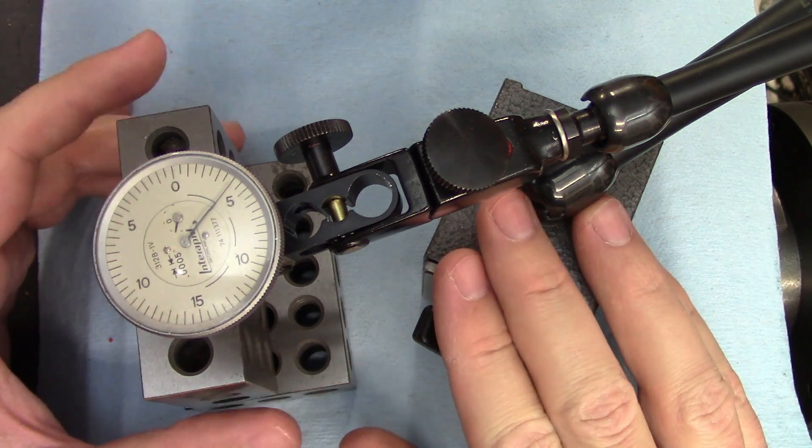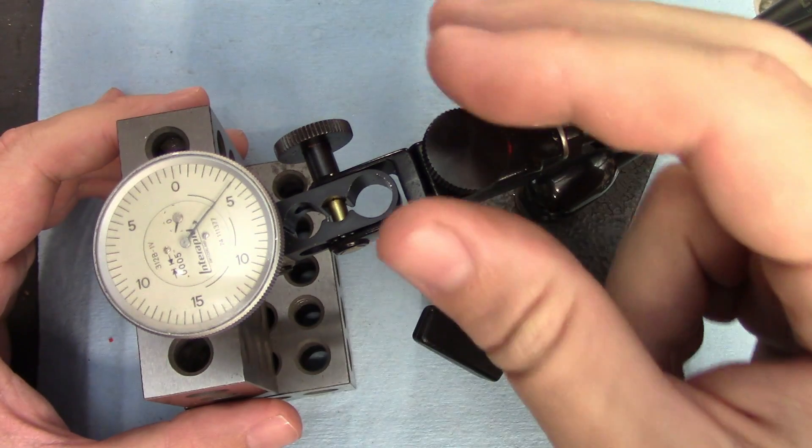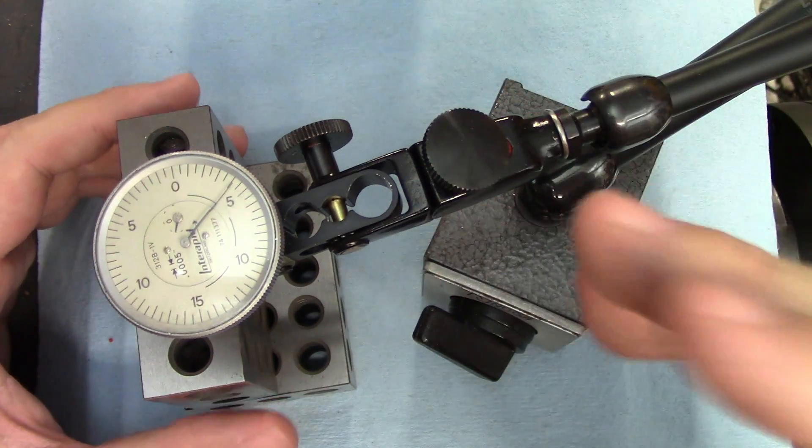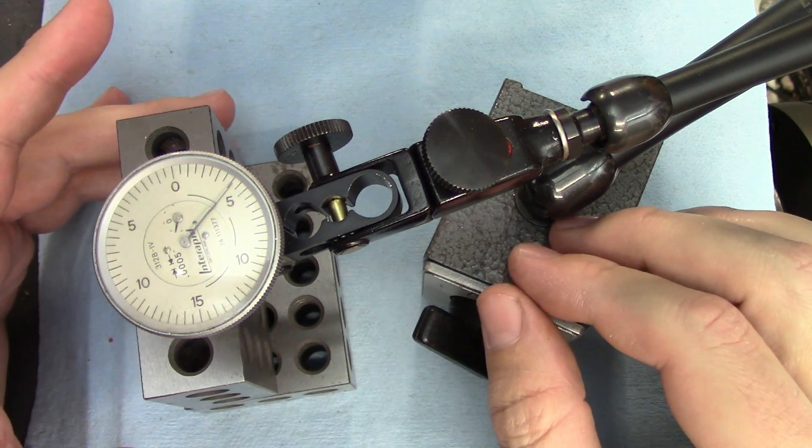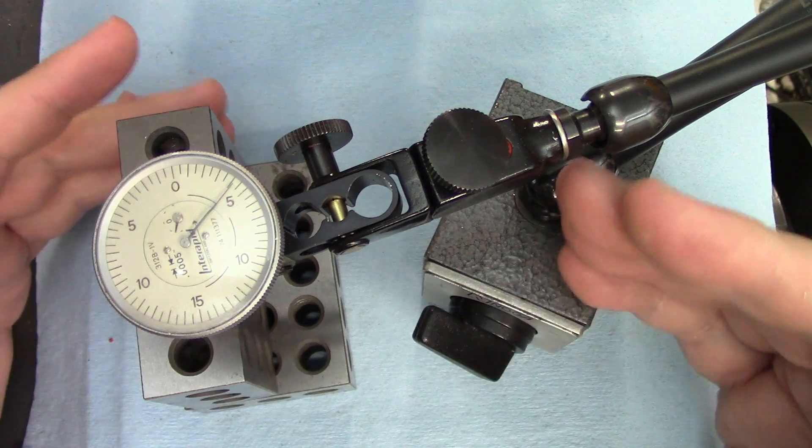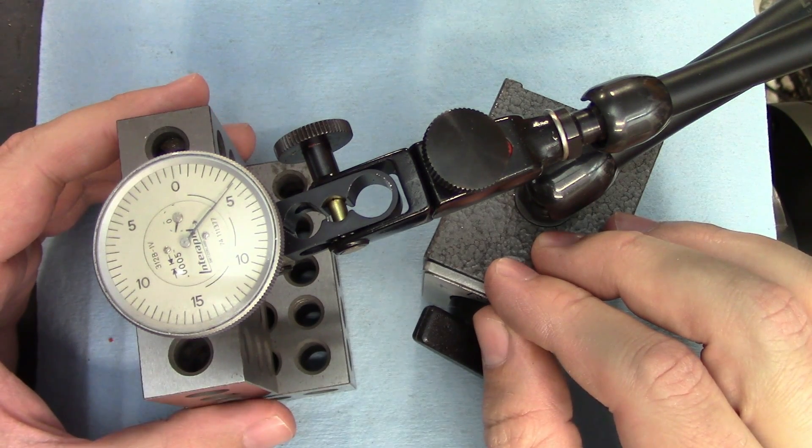No discussion about indicator mounting would be complete without addressing the fine adjustments available on some of these bases. Not every mag base has one, and they're not always needed. For example, if you're dialing in a part in the lathe or the mill, you can just use the machine axes to zero the indicator.